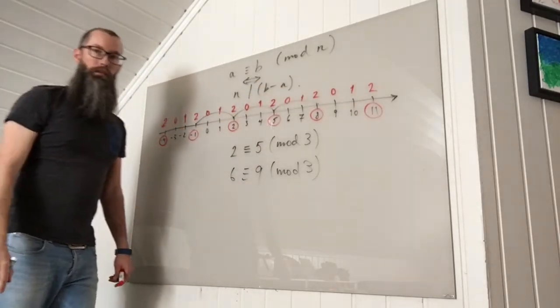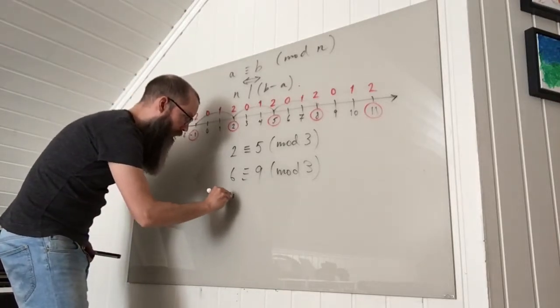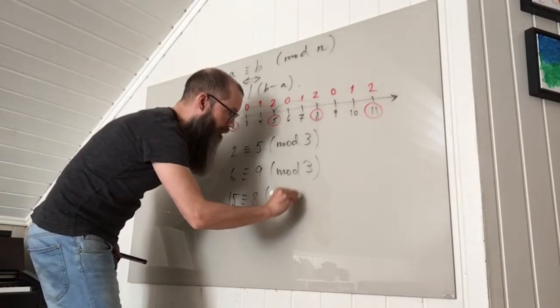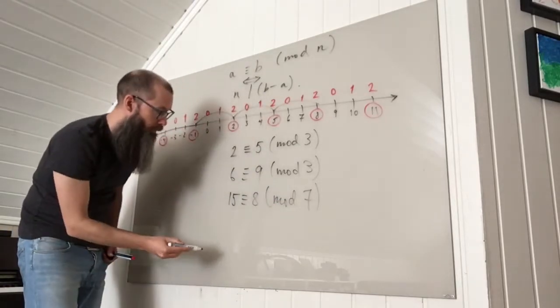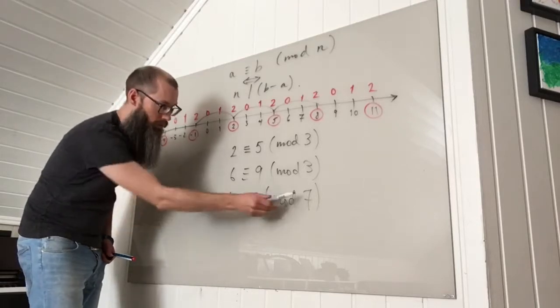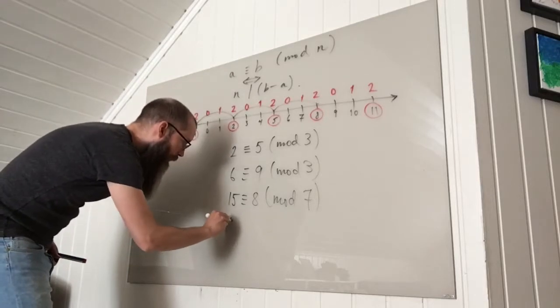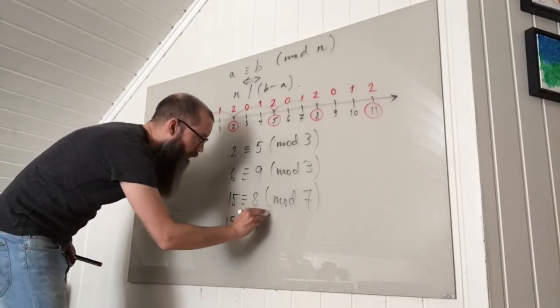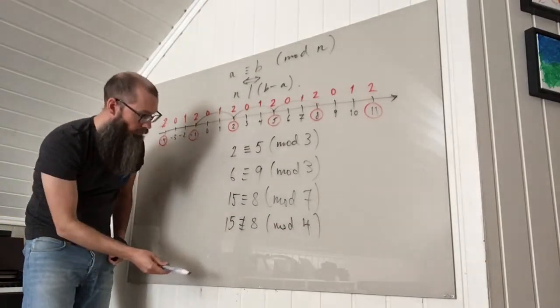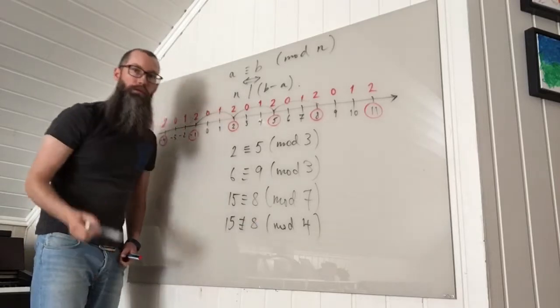So let's give a few other examples. For instance, is 15 congruent 8 mod 7? Yes, because the difference 8 minus 15 is negative 7 and is divisible by 7. However, 15 is not congruent 8 mod 4 because the difference is still negative 7 and that's not divisible by 4.